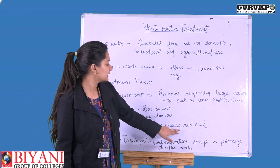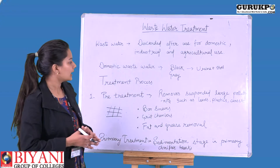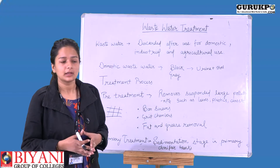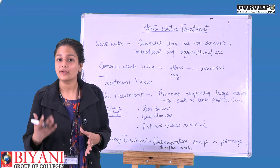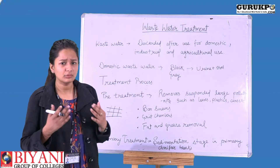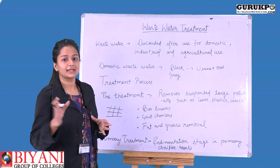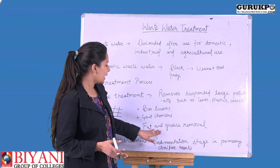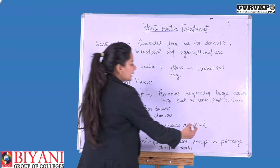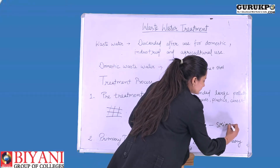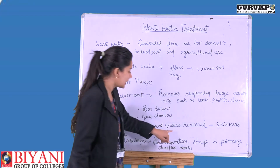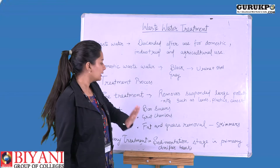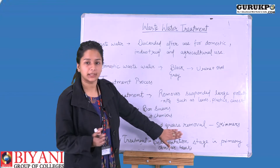Next is fat and grease removal. After removing suspended particles, our domestic wastewater also contains grease or fats, and it is important to remove them before discharging into any water resource. We remove fat and grease with the help of skimmers. Skimmers cause fat and grease to float on the surface of water, and with the help of airflow, the fat or grease is separated from the tank.